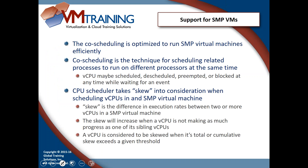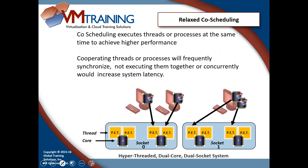A virtual CPU is considered skewed when its cumulative skew exceeds a given calculated threshold. There are two types of co-scheduling: strict co-scheduling — where all runners must run at the exact same speed — and relaxed co-scheduling, which lets one get a bit ahead. With relaxed co-scheduling, cooperating threads will frequently synchronize; not executing them concurrently would increase system latency. Think about a multi-threaded application running across four threads — if one thread got way ahead, the application would behave erratically and potentially blue-screen.